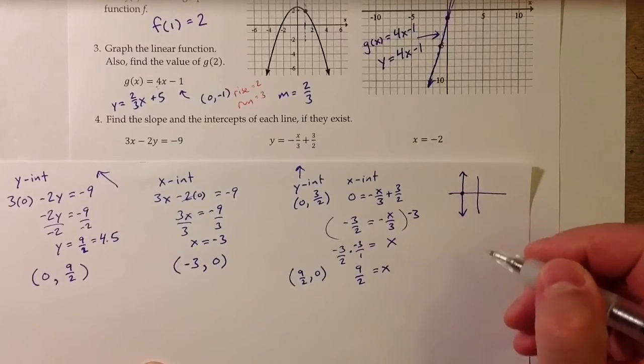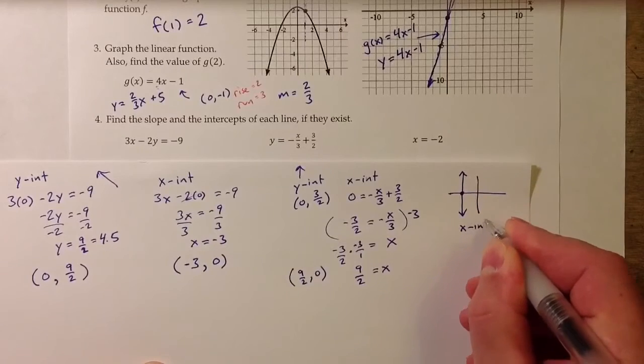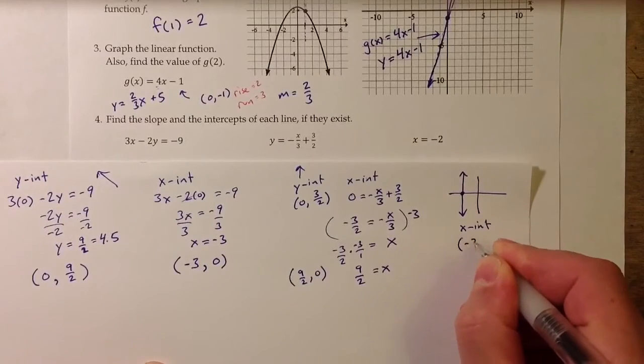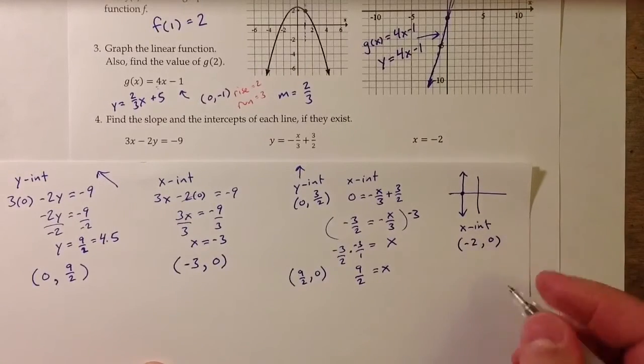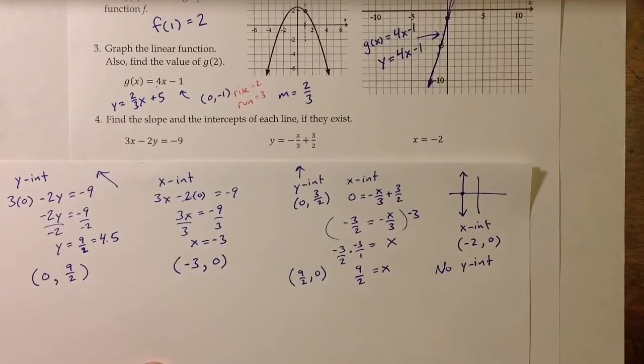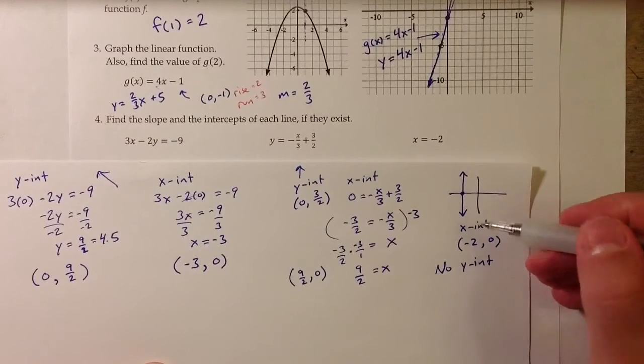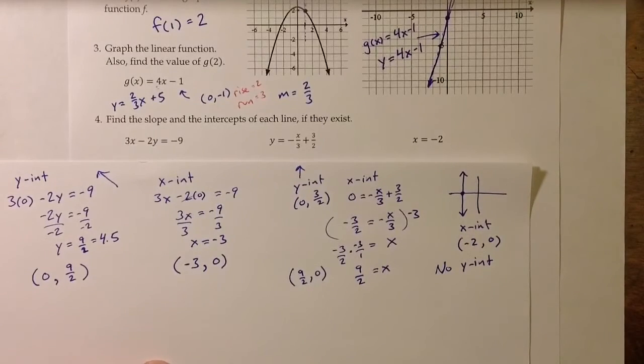But it does intersect the x-axis, so it has an x-intercept of negative 2, comma 0. But it has no y-intercept because the y-axis is a vertical line as well, so that line x equals negative 2 will never cross it.